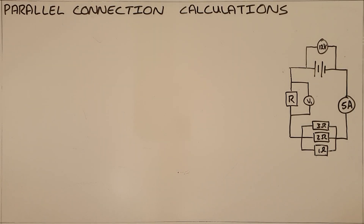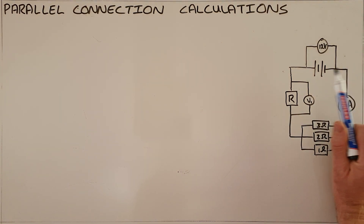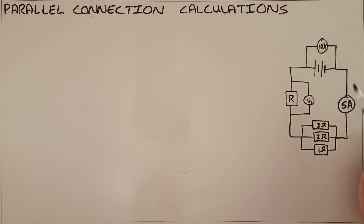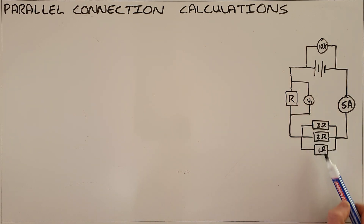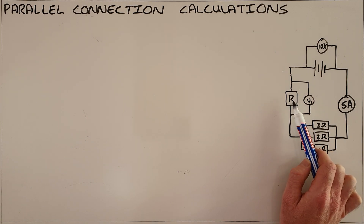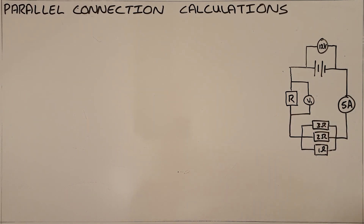Once you understand the rules for parallel connection it's possible to do calculations. Here we've been given a circuit with a 12 volt battery, a current of 5 amps being measured in that circuit, and then three resistors in parallel with each other and one resistor of unknown resistance with a voltmeter connected over it.